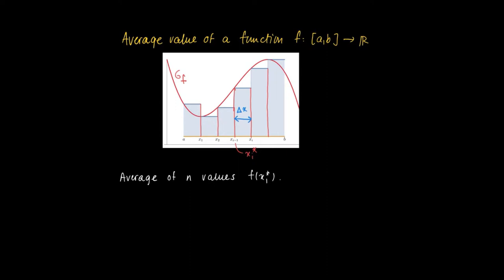Now the average of n values x_1 star through x_n star: if we select x_i star from each of such intervals, we generate f(x_1 star) until f(x_n star). Then the average of course is just the sum of the function values divided by n. So here we have f(x_1 star) plus etc. until f(x_n star) divided by n.